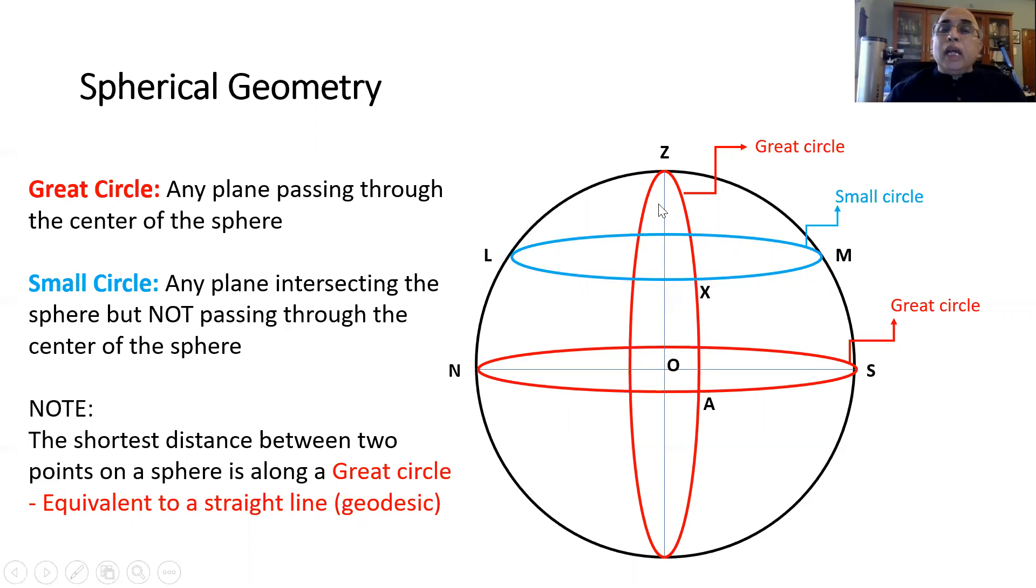In this picture we have these circles in orange, great circles because the planes are passing through the center of the sphere and the one which you see in blue is the small circle.